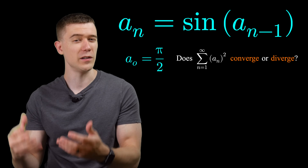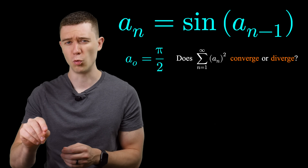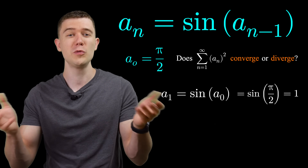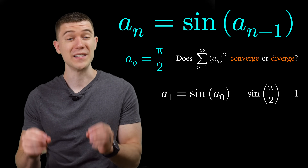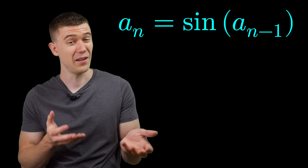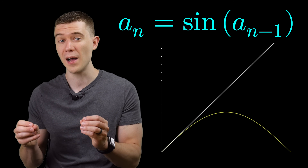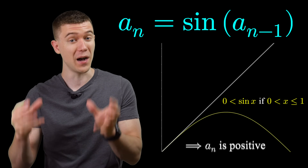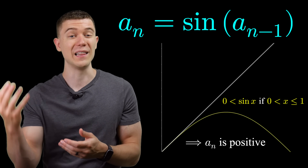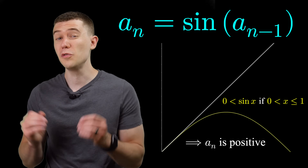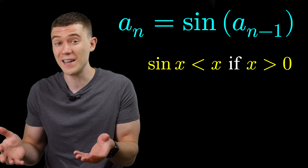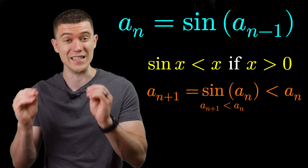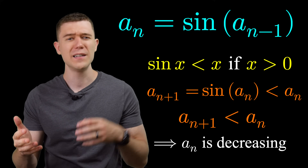To make our lives a little easier, let's find a sub 1 by plugging a sub 0 into this recursion. That would be sine of pi over 2, which we know to be 1. The next thing to note is that this sequence is both positive and decreasing. If we look at the graph of sine x and x on the same plot, we see that between x equals 0 and 1, sine is always positive and always less than y equals x. So a sub n is greater than sine of a sub n, meaning the sequence is decreasing.